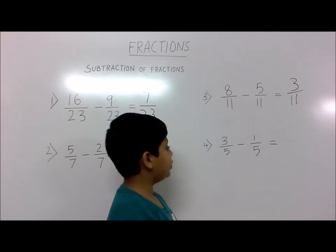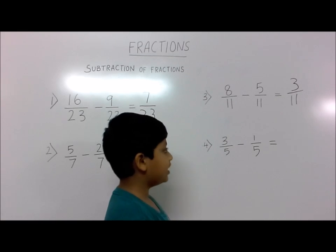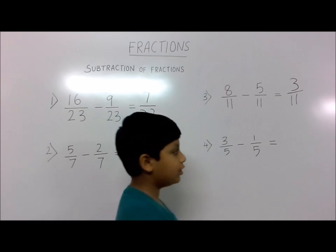Fourth question: 3 by 5 minus 1 by 5. 3 minus 1 is 2, so the answer is 2 by 5.